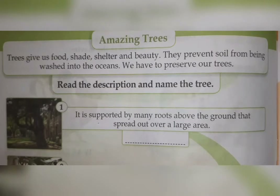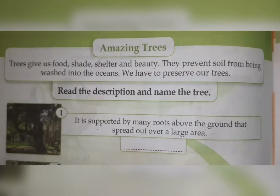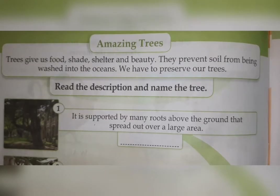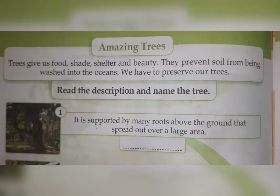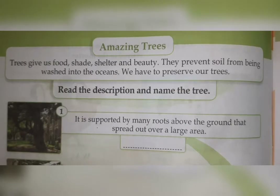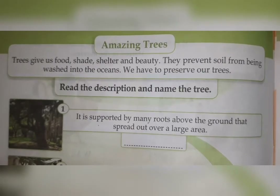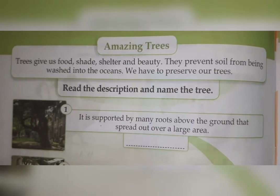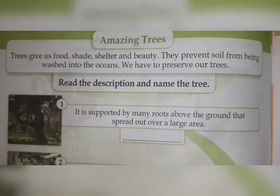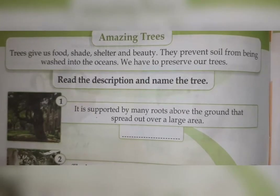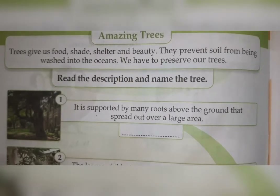On page number 8 there is our new chapter: Amazing Trees. Trees give us food, shade, shelter, and beauty. As we learned in science or EVS, trees are very helpful to us — they give us food like vegetables, fruits, leaves, and they also provide us shade.